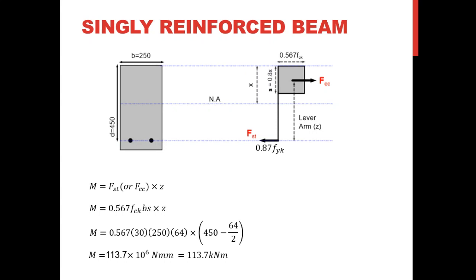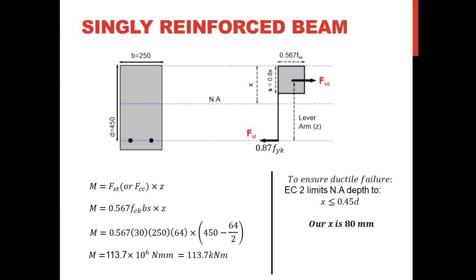With all values substituted, the moment of resistance comes out as 113.7 kNm. To check for ductile failure, I use the neutral axis depth x which we already found as 80 mm. For a ductile failure, x must be less than 0.45d. With d = 450 mm, the limit is 0.45 × 450 = 202.5 mm. Since x = 80 mm is well below 202.5 mm, the section will have a ductile mode of failure.